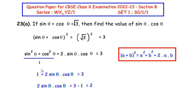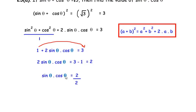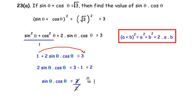Taking 1 to the other side of the equation, we get 2 sin theta times cos theta equals 3 minus 1, which gives us 2. Next, dividing both sides by 2, we get sin theta times cos theta equals 2 over 2, which equals 1. So the value of sin theta times cos theta is 1.